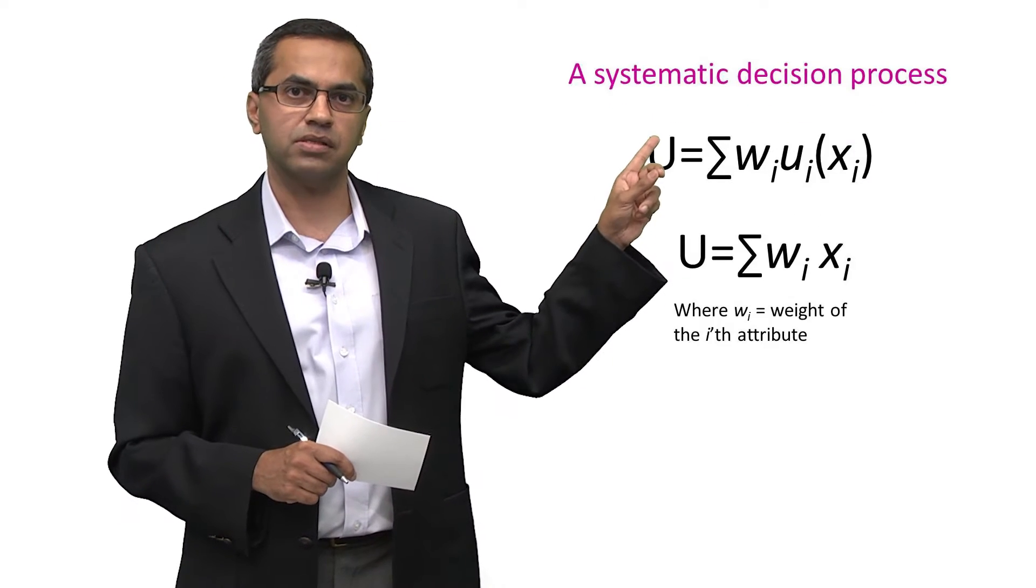How should people make good rational choices? A couple of weeks back, we saw a model of decision making that looked something like this.